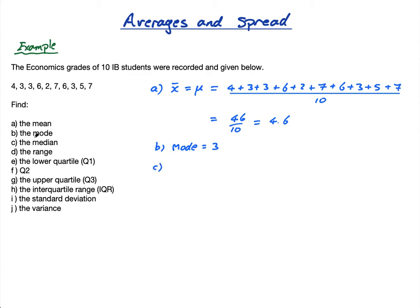Part C, the median. To find the median, the median is the middle number. It's going to be the middle one, but when they're arranged in order. So first arrange them in order. So we have 2, that's the lowest. And then we have 3, 3, 3. We have a 4. We have 1 five, 2 sixes, and 2 sevens.